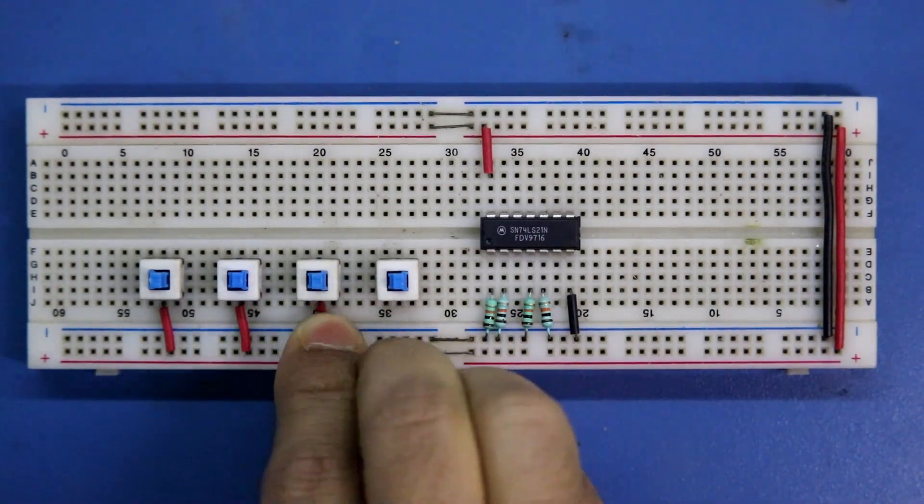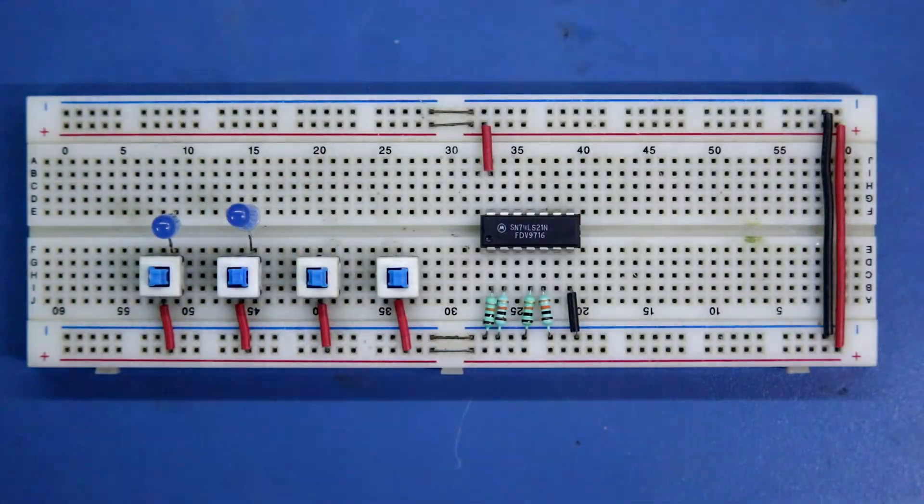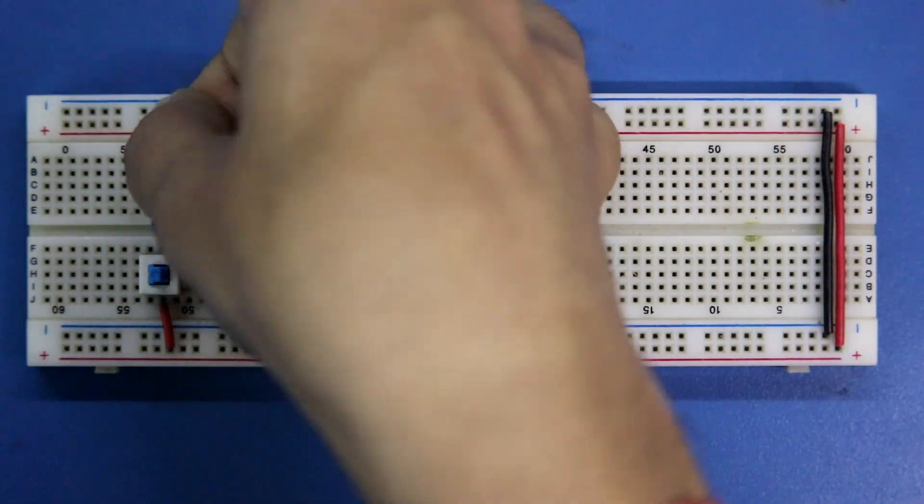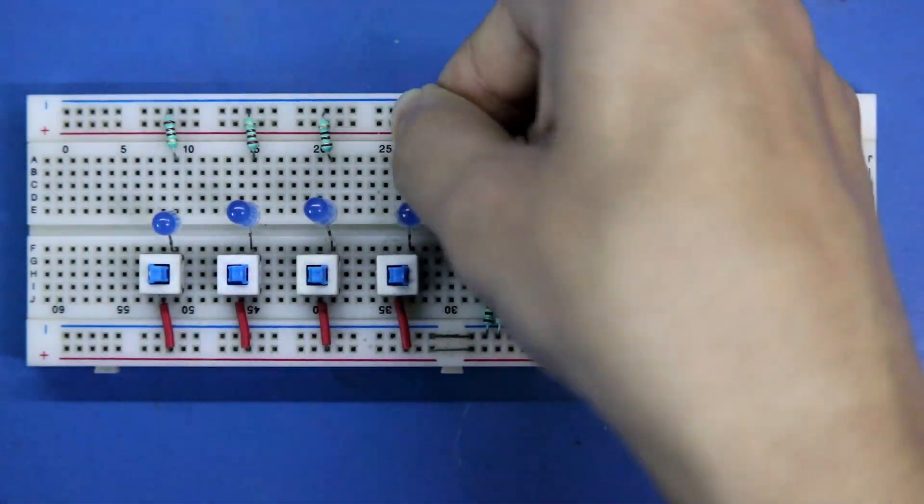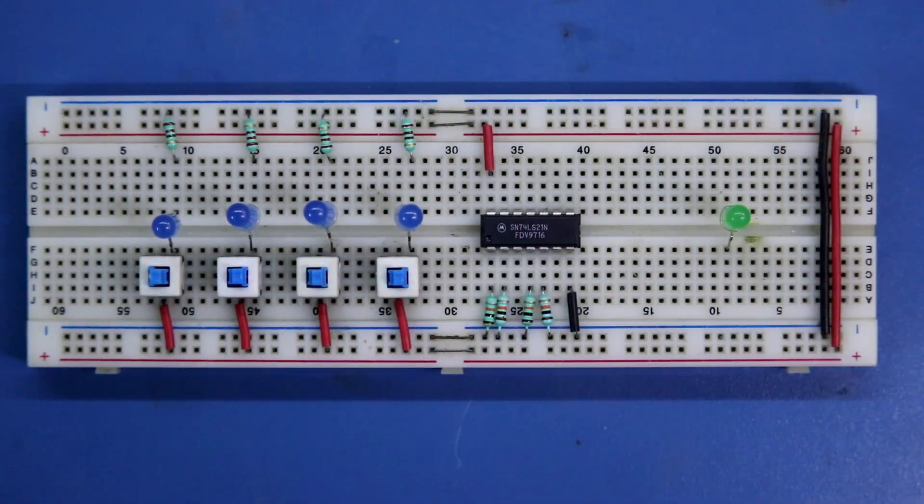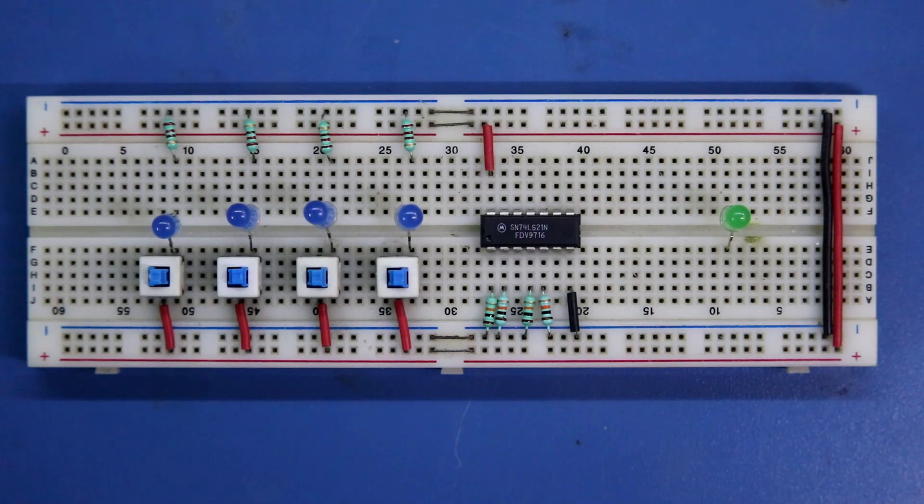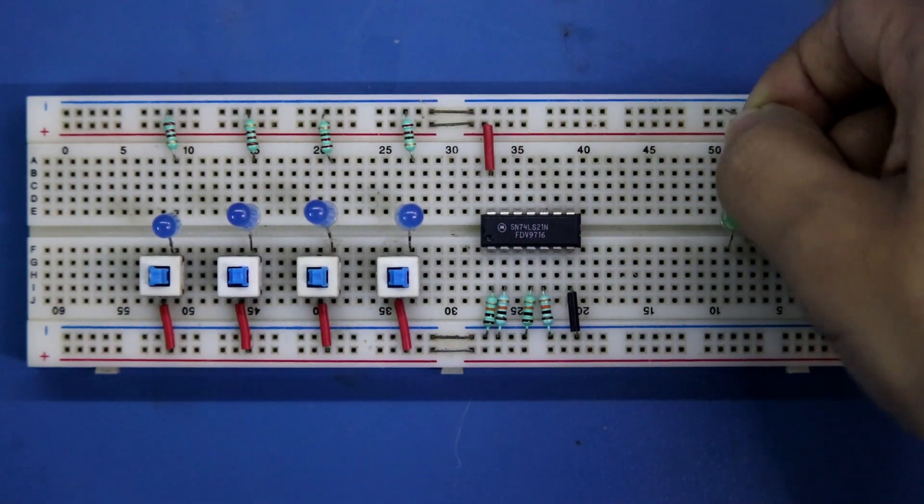Connecting the input LEDs, this side is positive and this side negative. Now connecting 220 ohms. Putting the output LED, this side is positive and this side negative. With the negative pin connecting 220 ohms.